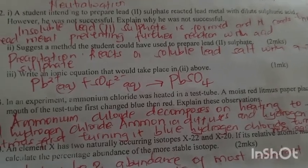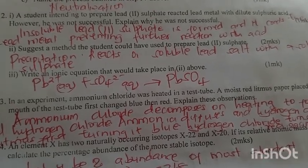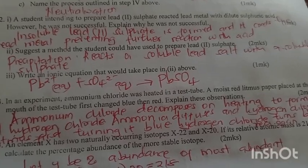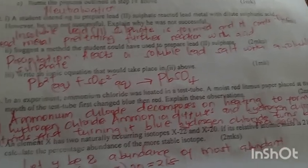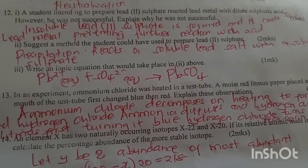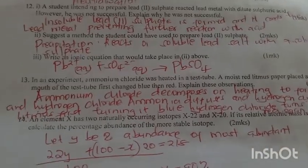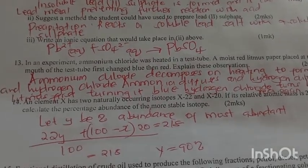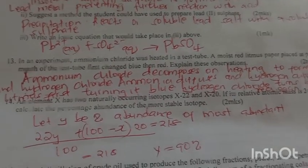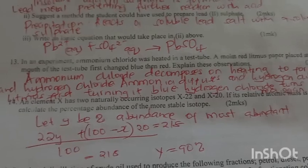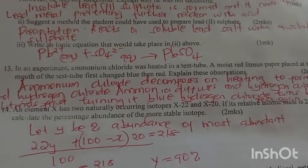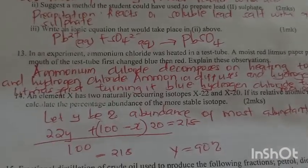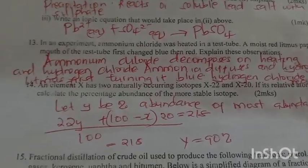A student intending to prepare lead sulfate reacted lead metal with dilute sulfuric acid. However, he was not successful. Explain why. Insoluble lead sulfate is formed which coats the lead metal, preventing further reaction with the acid. Suggest the method the student could have used. He should have prepared the sulfate using a soluble lead salt with a soluble sulfate, where the lead ions react with sulfate ions to form lead sulfate as the solid.